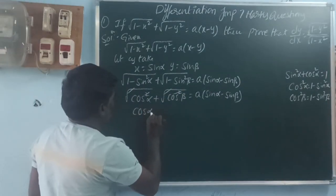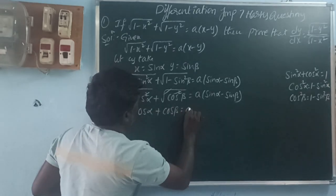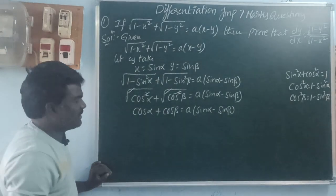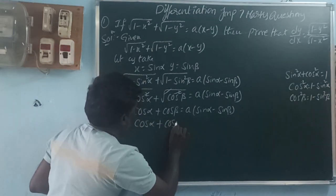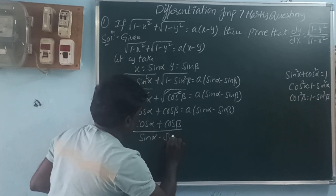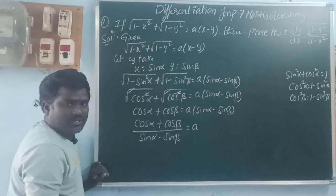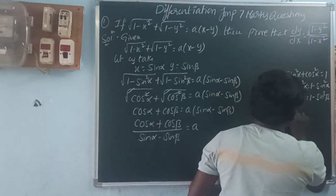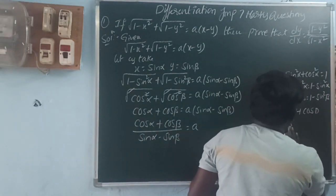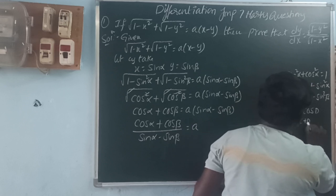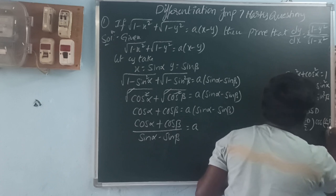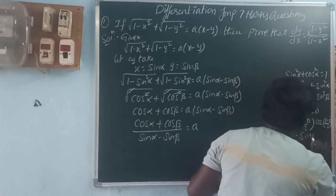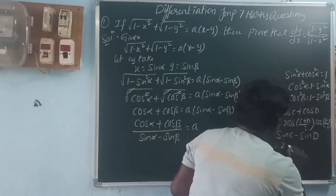The square roots cancel with the squares, so cos α + cos β = a(sin α - sin β). Rearranging: (cos α + cos β) / (sin α - sin β) = a. Now the numerator is in the form cos C + cos D, and the denominator is in the form sin C - sin D.